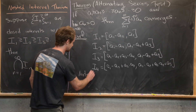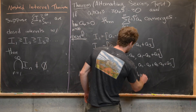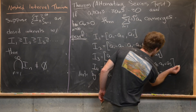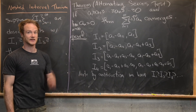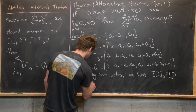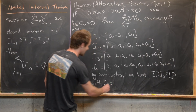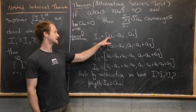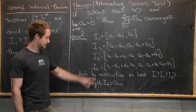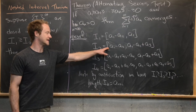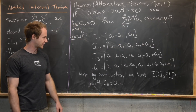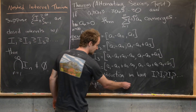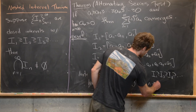By construction we have two key facts: first, the intervals are nested, so I_1 ⊇ I_2 ⊇ I_3 ⊇ ... Second, the length of I_n equals a_{n+1}. The distance from a_1 - a_2 to a_1 is a_2, so the length of I_1 is a_2; the length of I_2 is a_3, and so on. Since the limit of a_n is 0, the lengths of the intervals approach zero as n → ∞.